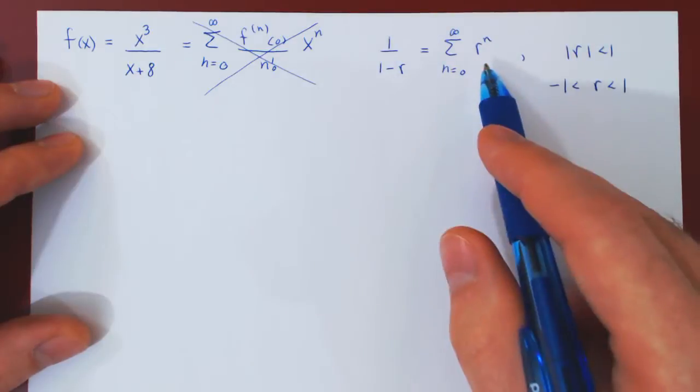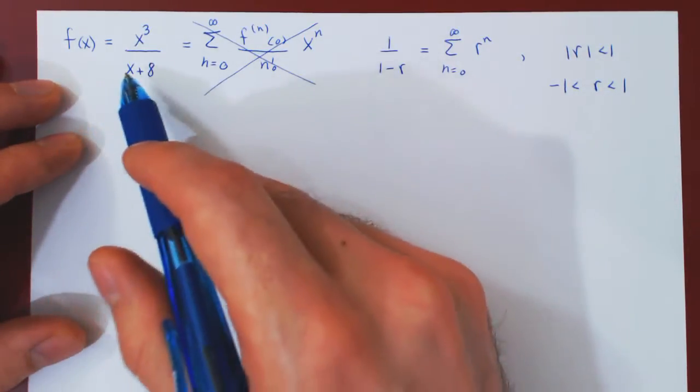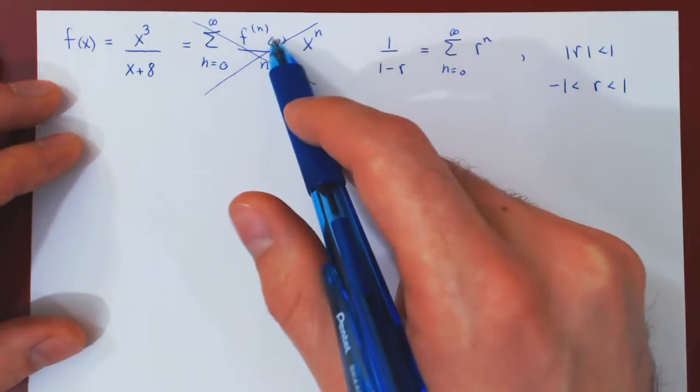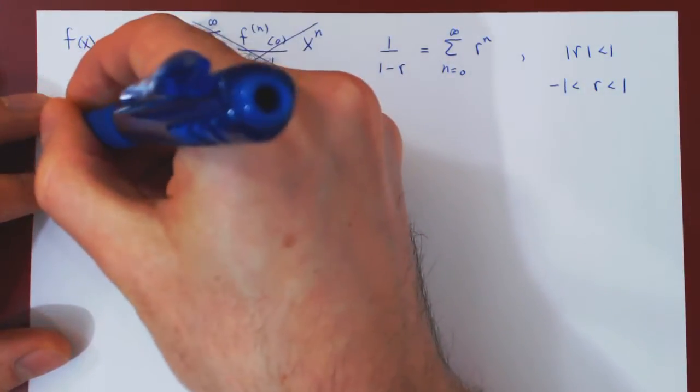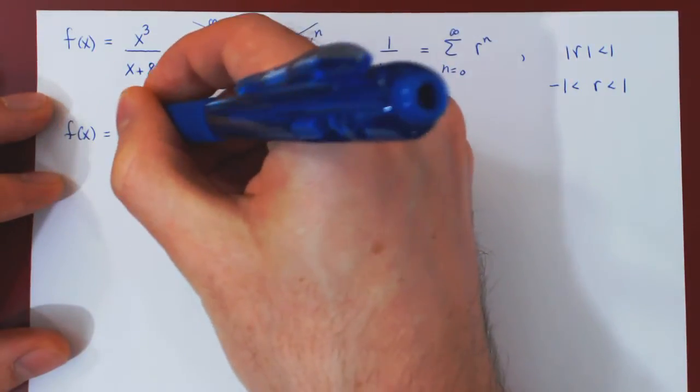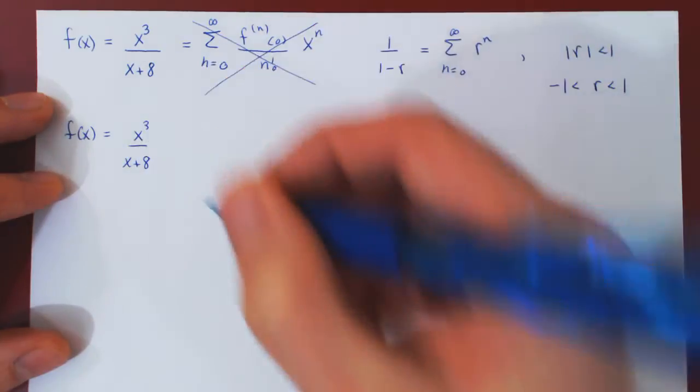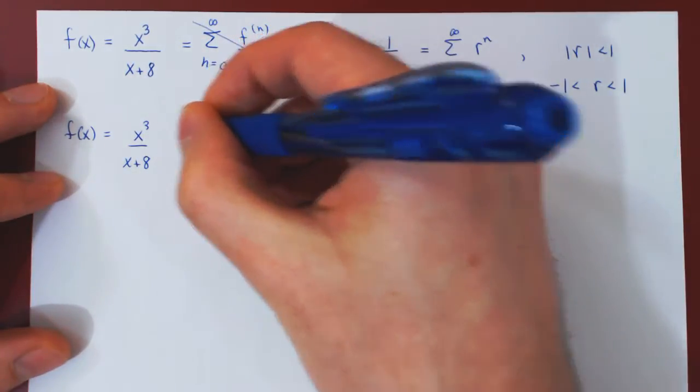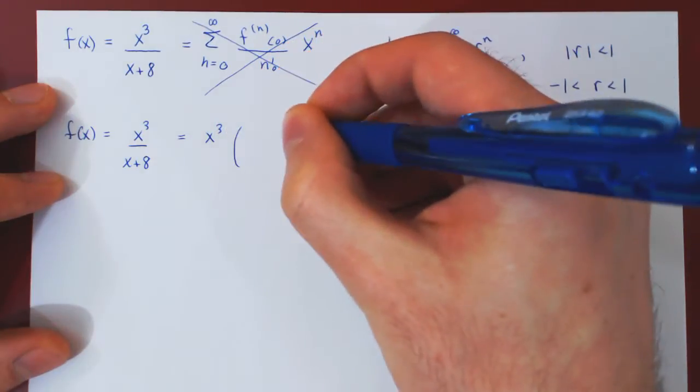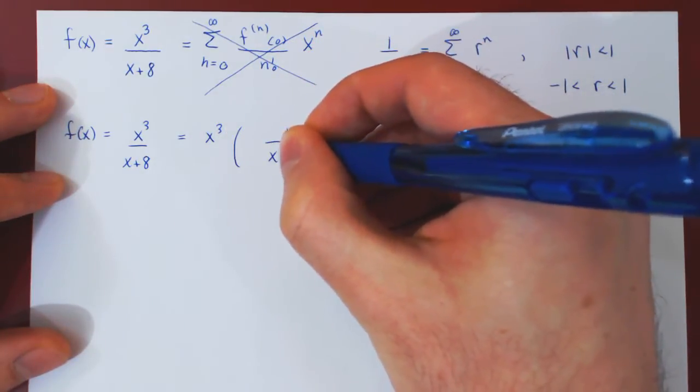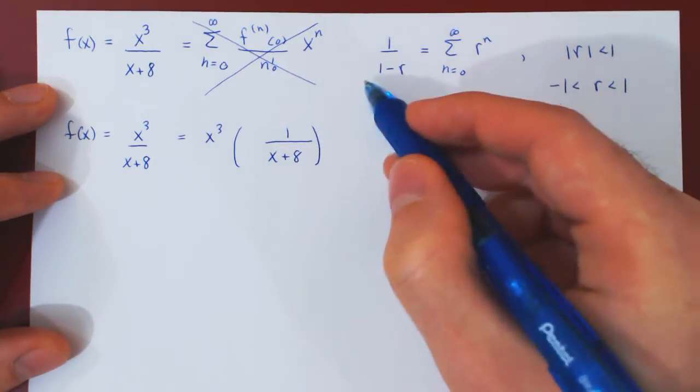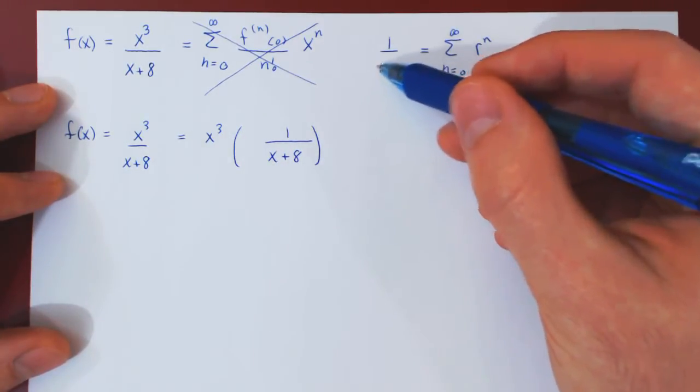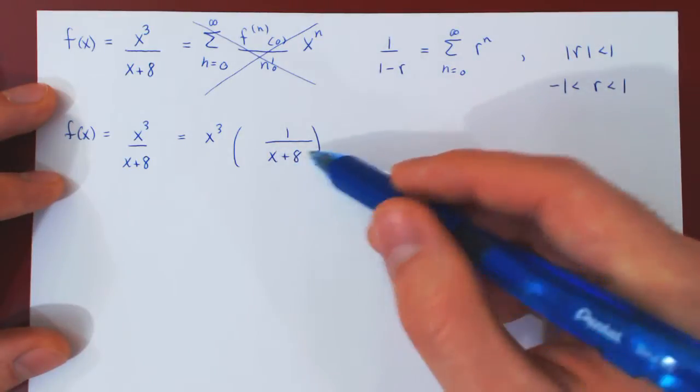So let's see now how we can use this idea to find the Maclaurin series of the given function, without finding higher derivatives of this function, evaluating at 0, and looking for a pattern. First thing, we have a 1 in the numerator, so we'll factor the x cubed. So this looks a little closer, 1 over 1 minus r, 1 over x plus 8. Look at the denominator, the constant comes first, then the variable. So here it's the variable, the constant, I'll simply swap the 2.